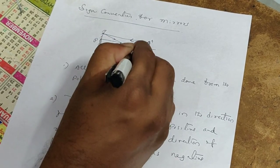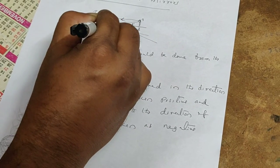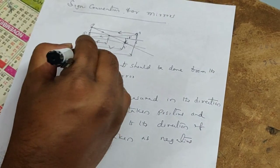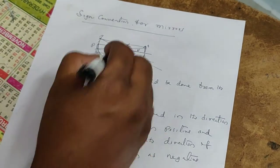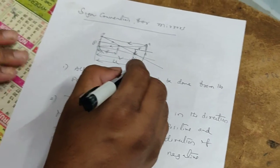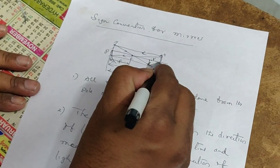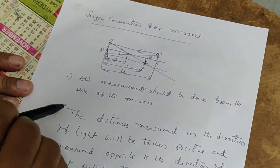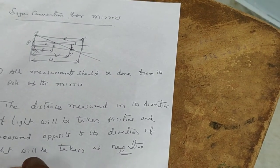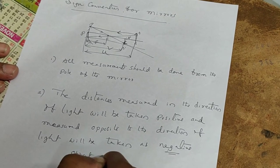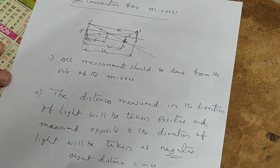An image formed at this point is called v, the image distance, and f is called the focal length. Now, measuring from pole to object, we are going opposite to the direction of light, so u will be taken as negative — minus u. The sign is very important and will be useful for doing problems.